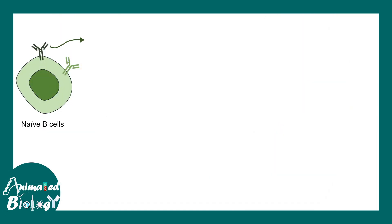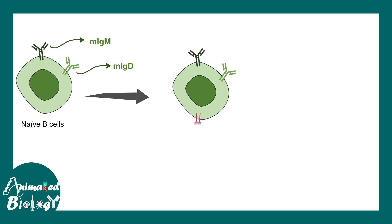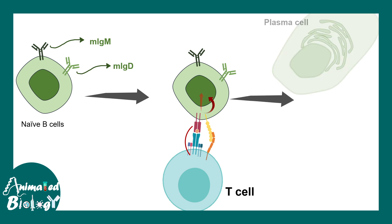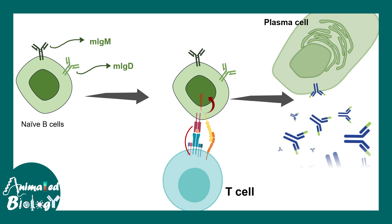Naive B cells produce membrane-bound IgM and IgD by default. These are the predominant antibodies present in a naive B cell. Eventually the naive B cell encounters a T cell, they interact, become activated, and the B cell differentiates into a plasma cell. Plasma cells can produce different types of antibodies — for example, IgG. But producing IgG from the default state of IgM requires isotype switching.